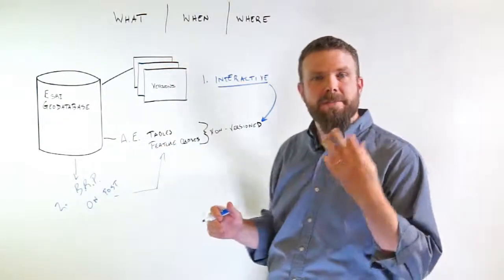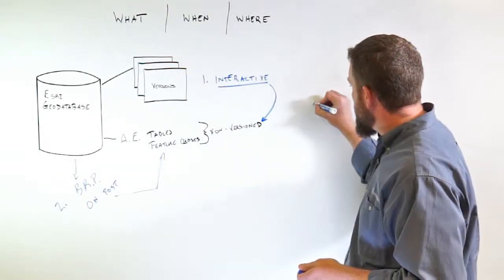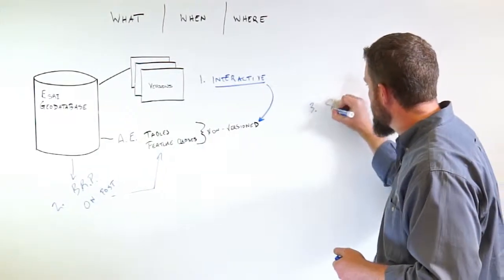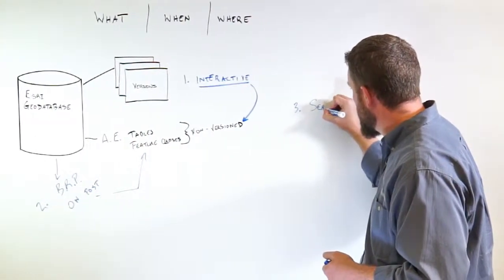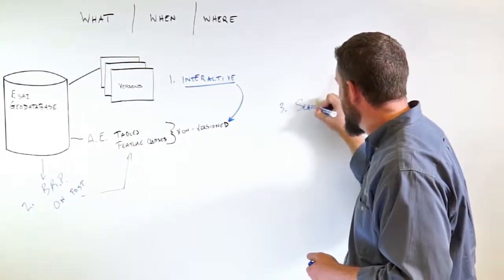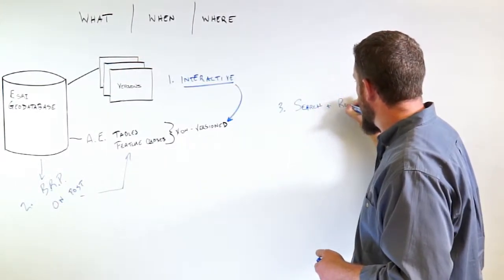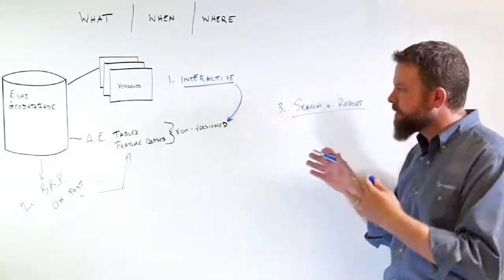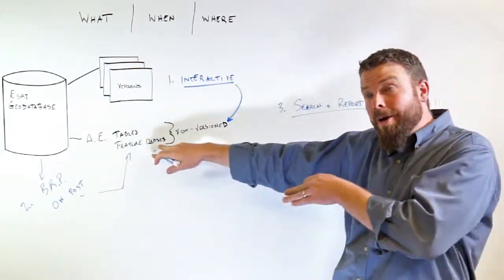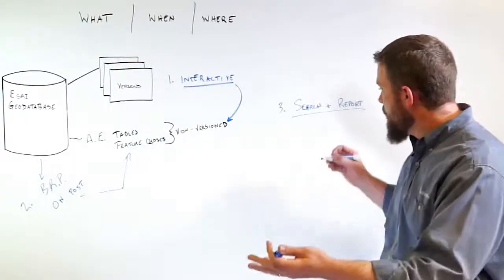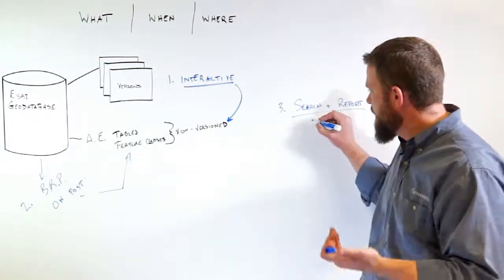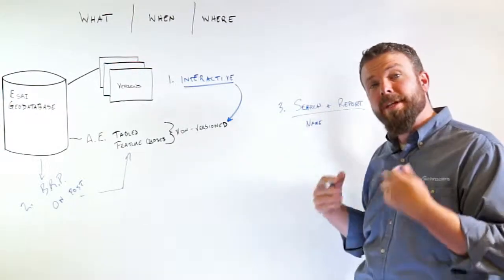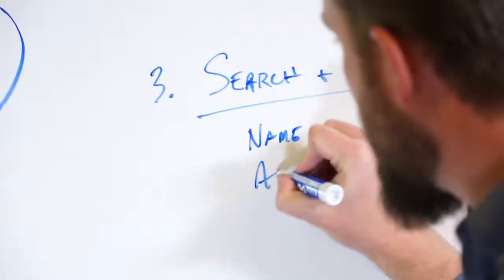So the final piece that we have that's really important is what we call the search and report. As we're searching and reporting, it allows us to interactively query the all edits tables. We can query those on things like the actual name of the version, the owner of the version. And now with some of the advanced functionality, we're able to query on actual attributes.